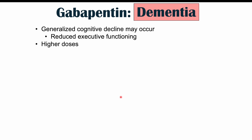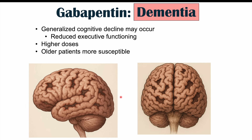This is seen more in older patients, although there is some evidence that even younger patients who take gabapentin for long periods of time have an increased risk for dementia — all because gabapentin suppresses neuronal functioning and doesn't allow neurogenesis and synaptogenesis to occur as they should.